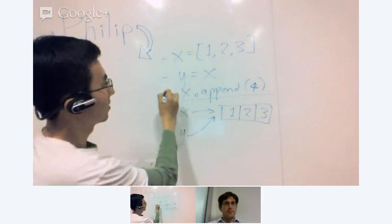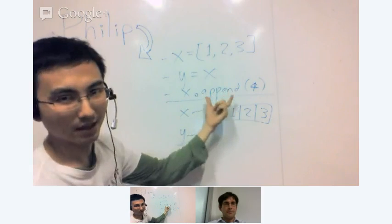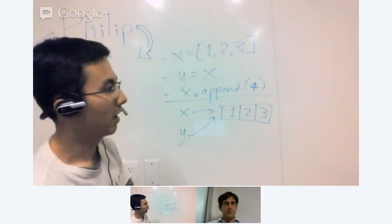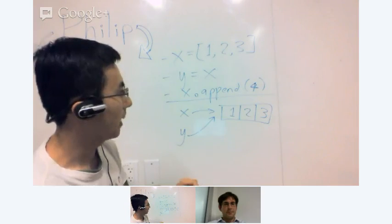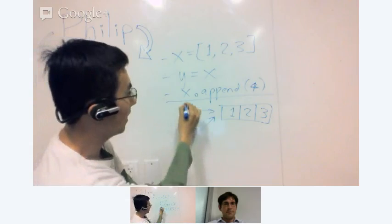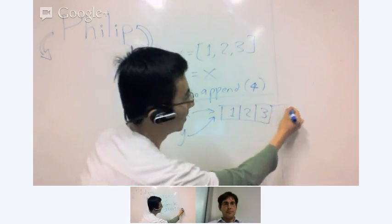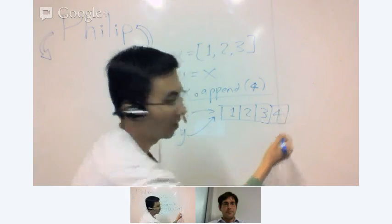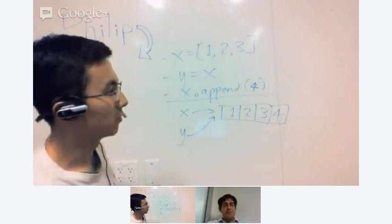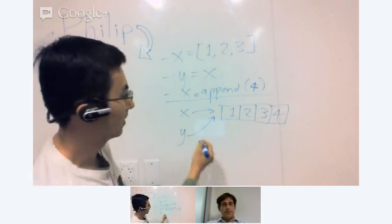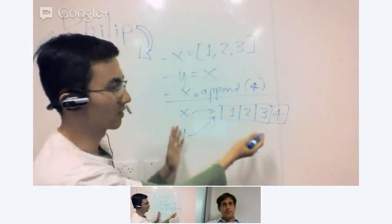And then the third line to execute here is x.append(4). So append is a method in the Python standard library that adds a new element to the end of a list. So here what happens is pretty clear. So you have x, you follow the arrow to this object, and you put 4 to the end. So then later on, if the teacher asks the student, what is the value of y now? Y follows here. Y actually has four elements, and so does x because it's the same object.